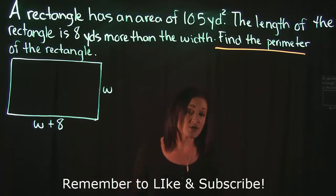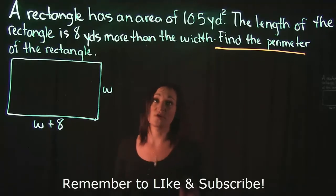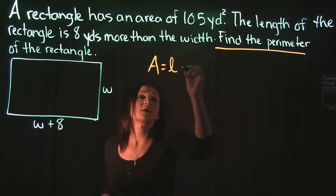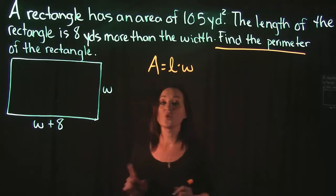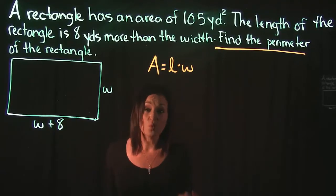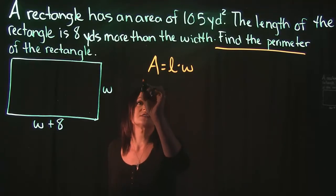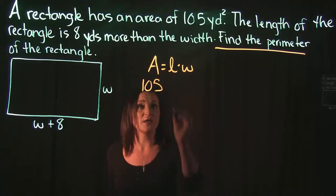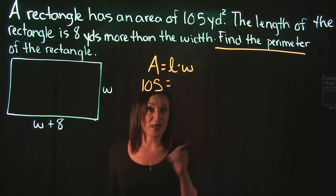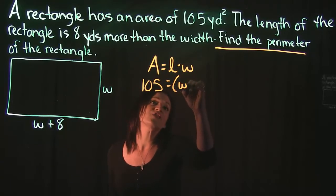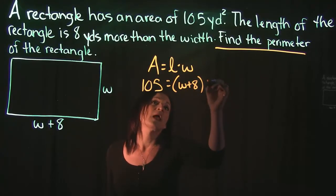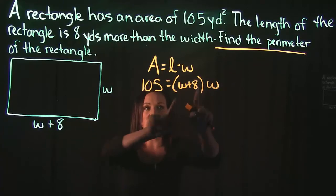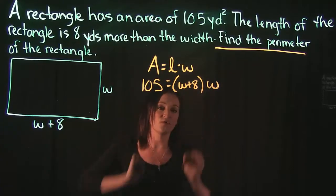Since they started with the area, that's the formula we're going to work first. The formula for area of the rectangle is A equals length times width. The area is 105 yards, so I'm going to plug in 105 for A. That equals the length times the width. The length is W plus 8 and the width is just W.